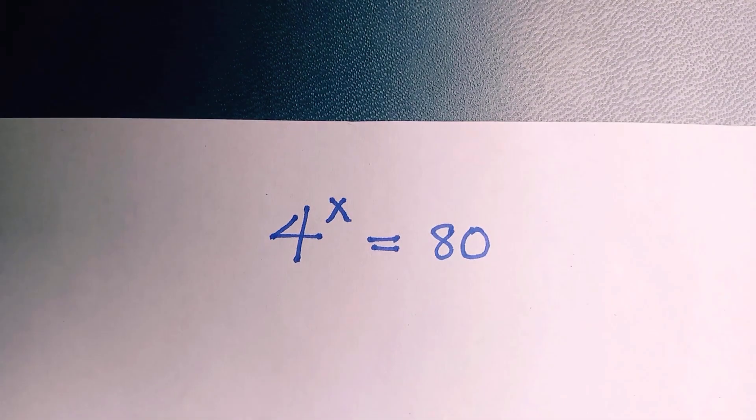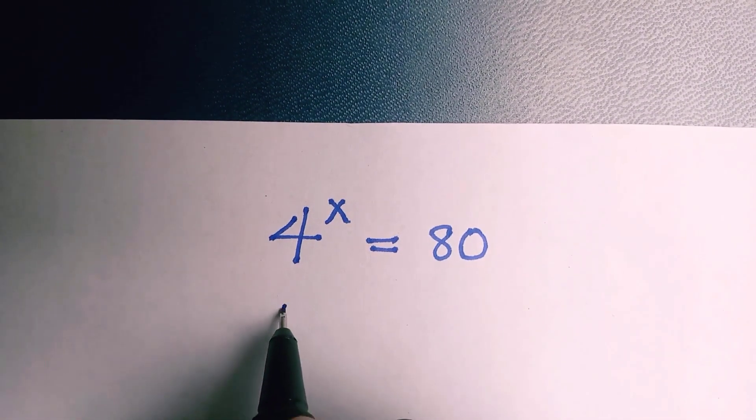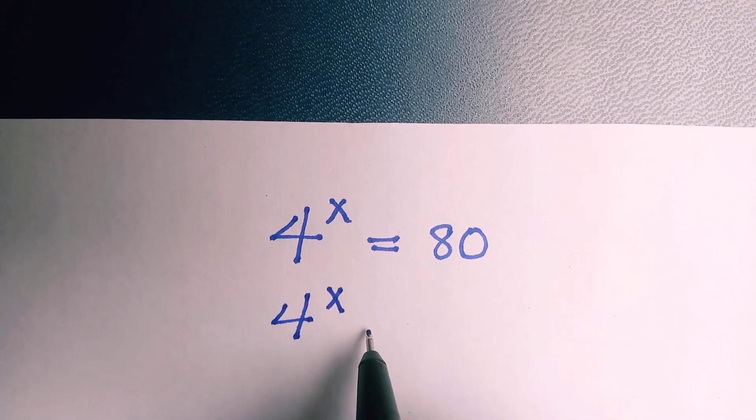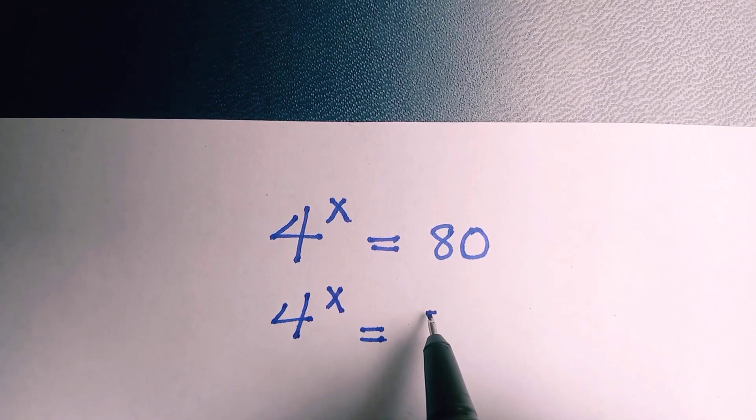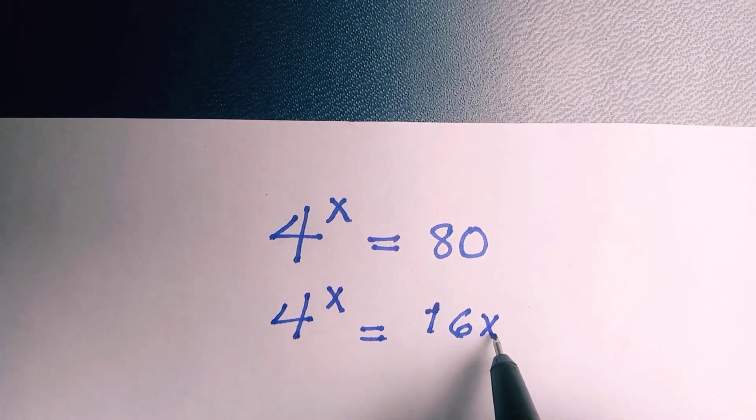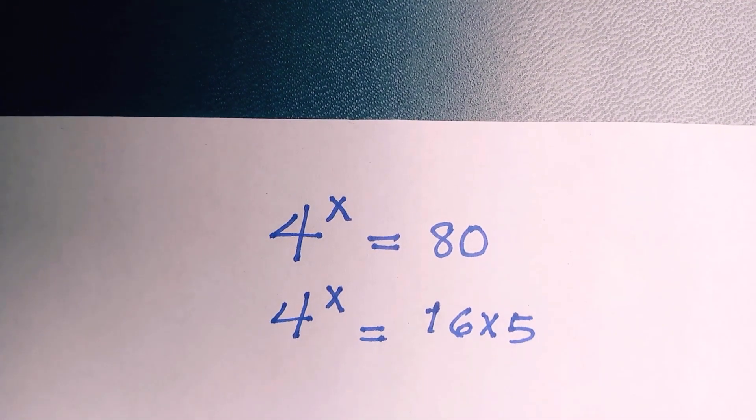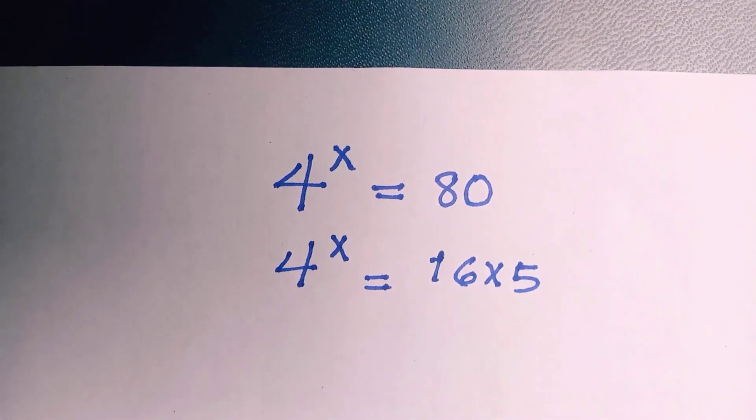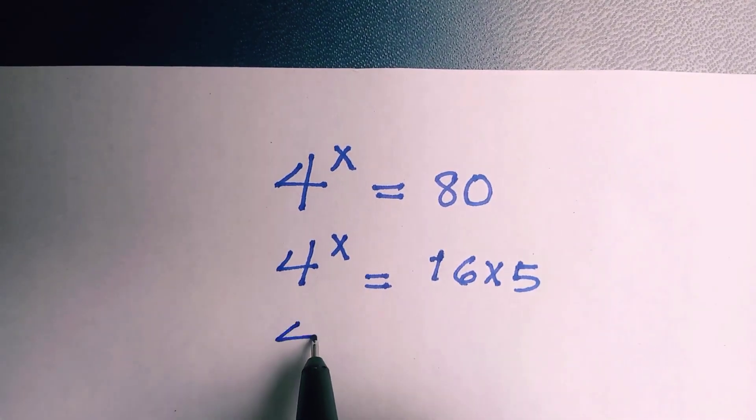The first thing to do is we multiply 16 and 5 together just to have this common base at the two sides. Having this, we have 16 multiplied by 5, and this 16 multiplied by 5 can also be written as 4 to the power 2.